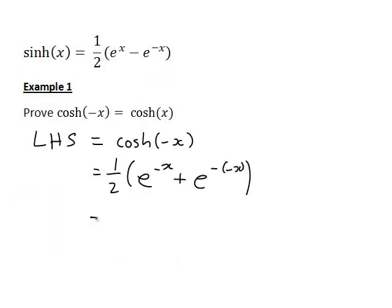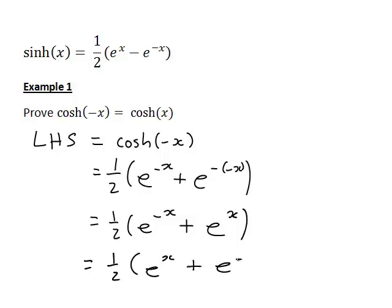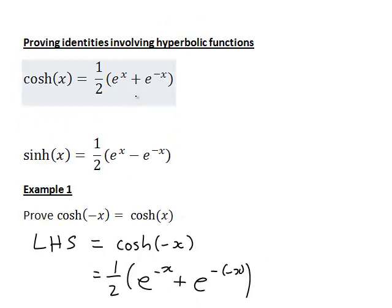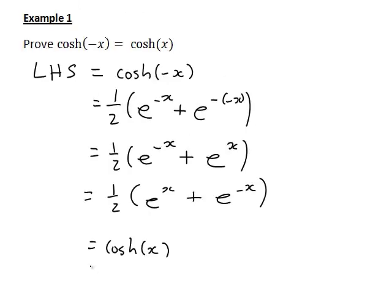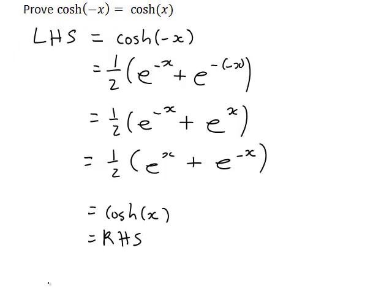Putting in negative x everywhere for the argument, that simplifies to a half e to the negative x plus e to the negative of negative x, which is just e to the positive x. Swapping those two terms gives a half e to the x plus e to the negative x, which is indeed the definition of cosh x — the right hand side of the equation. We have therefore proved that cosh of negative x equals cosh x.